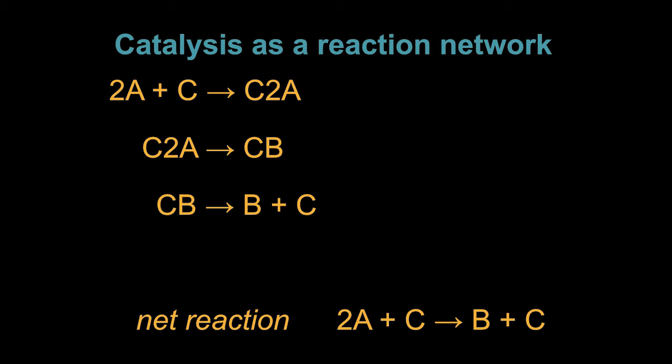I've taken the same reaction, 2A plus catalyst goes to B plus catalyst, and I've split it into three reaction steps. In the first step, the two A molecules, which are called the substrate, bind to the catalyst. This binding would normally be through electrostatic forces, but we can think of the complex thus formed as being like a molecule. The second step is that the reaction itself occurs, and the third step is that the product unbinds from the catalyst particle, leaving it free to participate in further reactions.